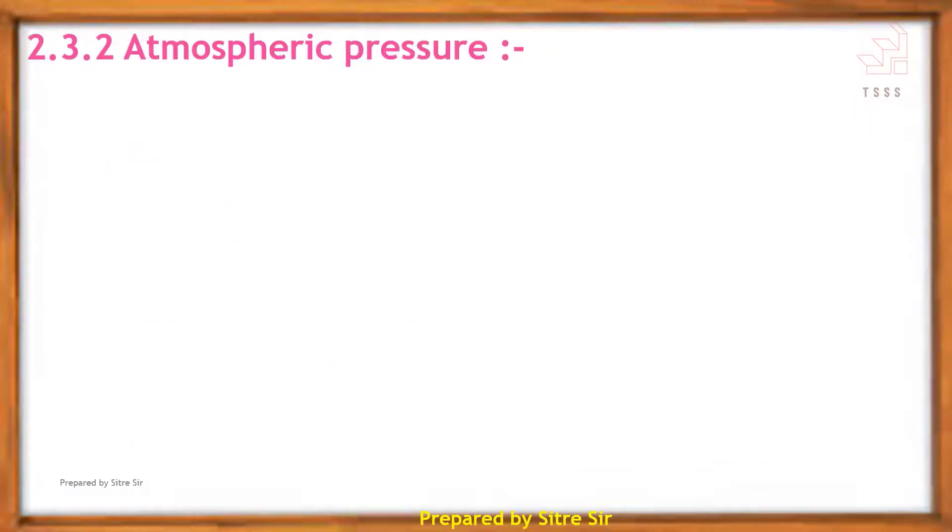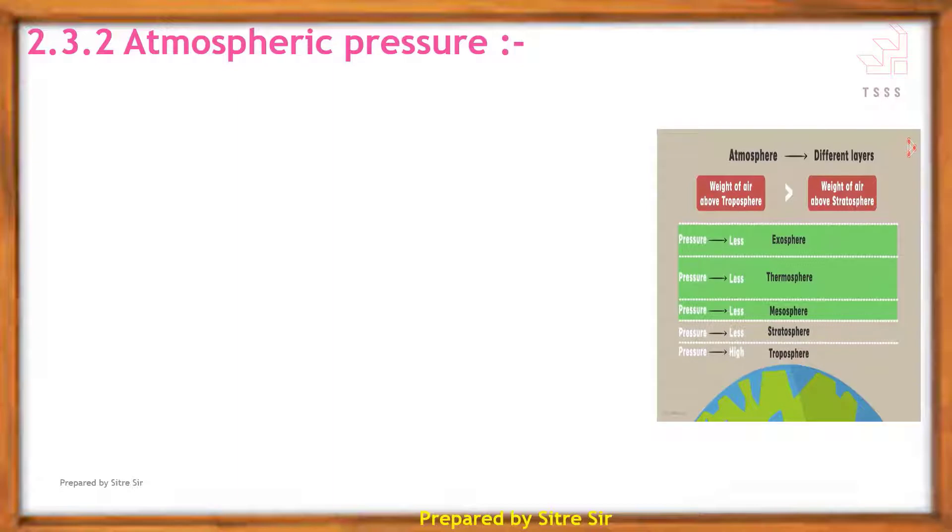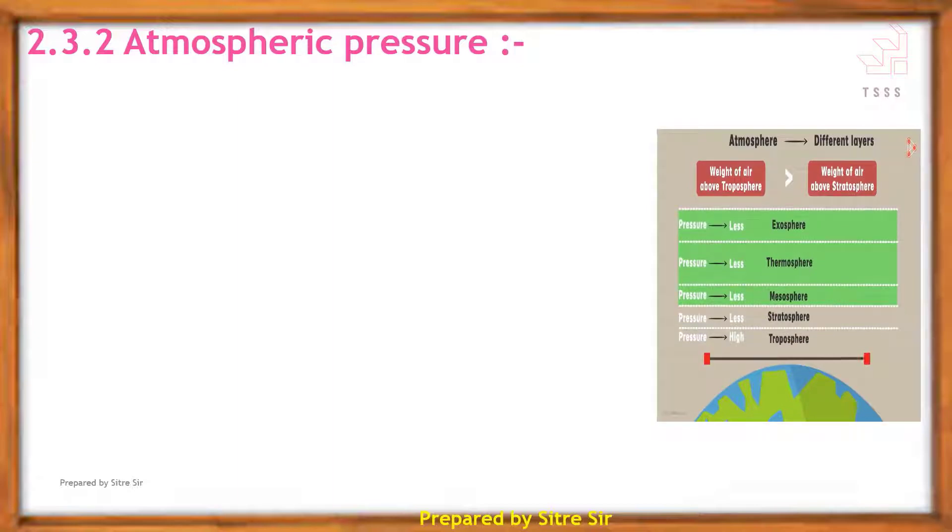Next point: atmospheric pressure. Let us observe this video. In this video, the Earth and its atmosphere are divided into different layers: troposphere, stratosphere, mesosphere, thermosphere, and exosphere. These are the layers of the Earth's atmosphere.